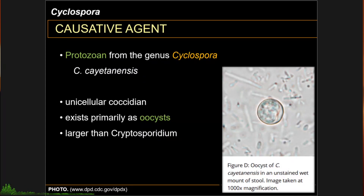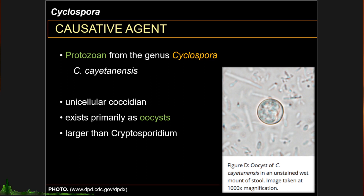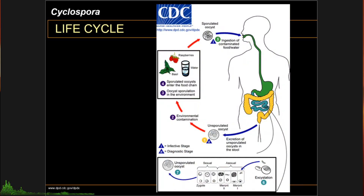The causative agent for cyclosporiasis — the disease caused by Cyclospora — is a protozoan from the genus Cyclospora, primarily Cyclospora cayetanensis. Very similar to Cryptosporidium, it is a unicellular coccidian. However, its cysts are larger than Cryptosporidium cysts.